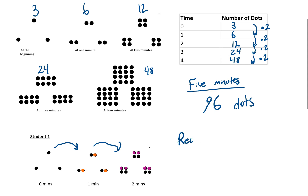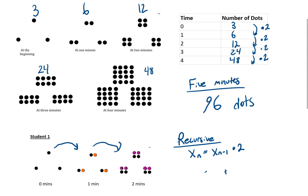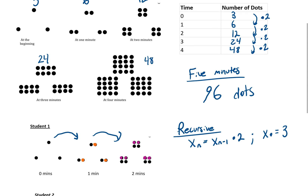We can write a recursive function rule: X sub n equals X sub n minus 1 — that's the algebraic way of saying the next number comes from the previous number. For example, the seventh number comes from the sixth number. What do we do to the sixth number to get the seventh? We multiply by 2. Our starting point is X sub 0 equals 3 dots.